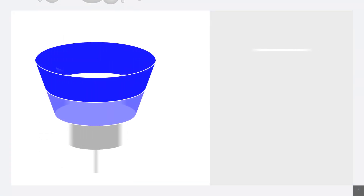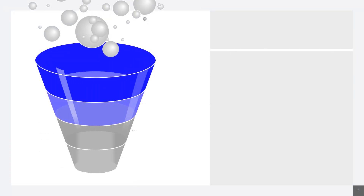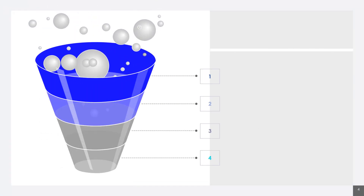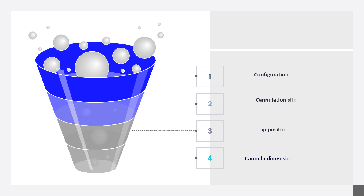For description of levels of ECMO nomenclature: the first level is configuration, the second level is cannulation site, the third is tip position, and the fourth level is cannula dimension.